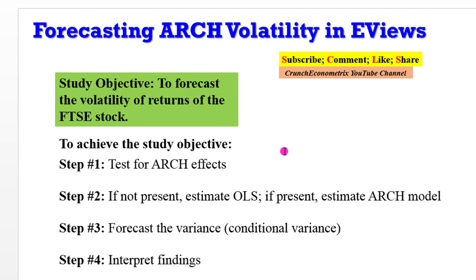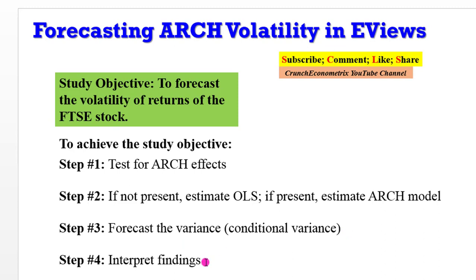If you have been following this tutorial, the study objective is to forecast the volatility of returns of the first stock. To achieve that, these are the steps that must be taken: you first have to test for ARCH effects. If ARCH effects are not present, simply estimate OLS. But if ARCH effects are found to be present, proceed to estimate the ARCH model. Thereafter, forecast the variance — also known as the conditional variance — and then interpret your findings.